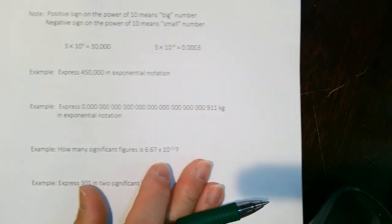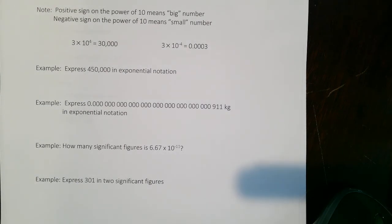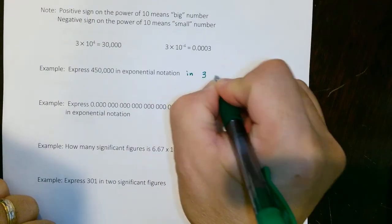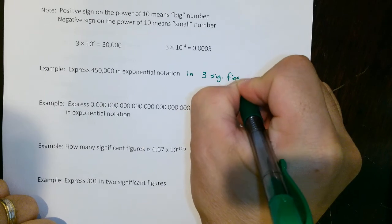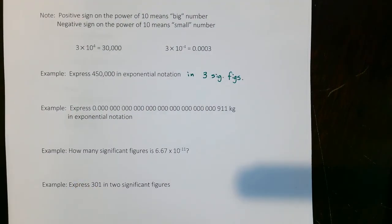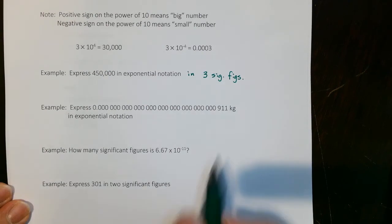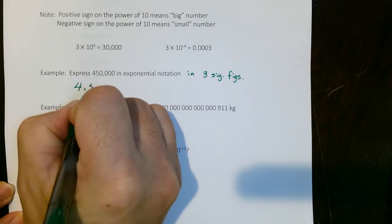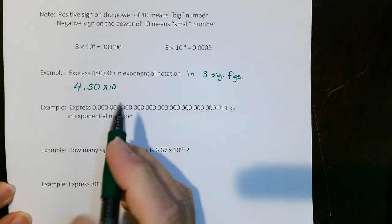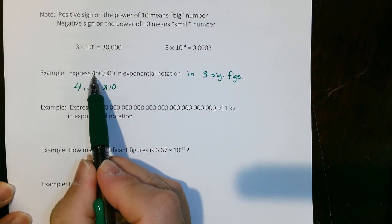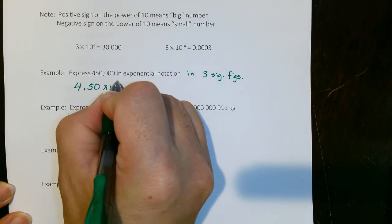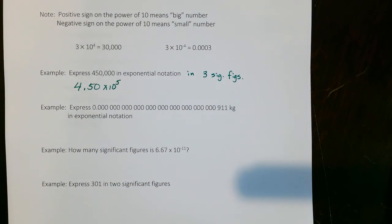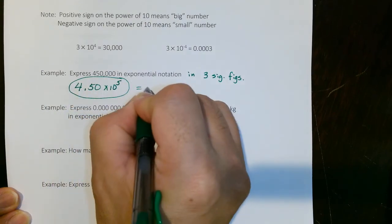Let's express 450,000 in exponential notation in three sig figs. Since we want three sig figs, we use the first three digits. So 450,000 becomes 4.50 × 10⁵. It's a big number, so it has a positive exponent. This is the same as 450,000.